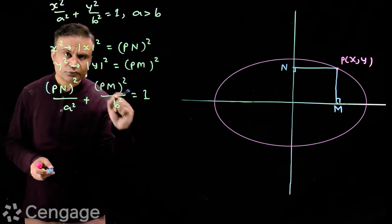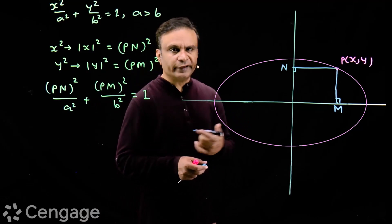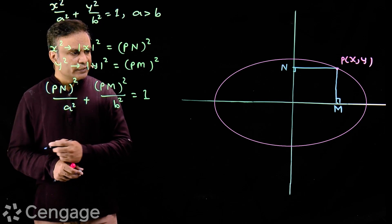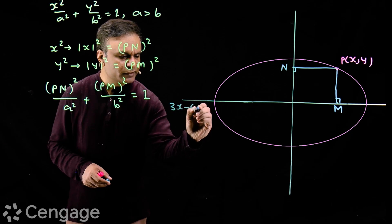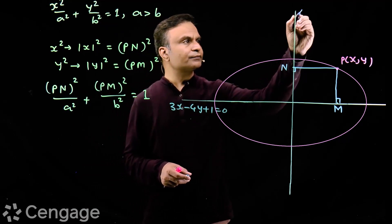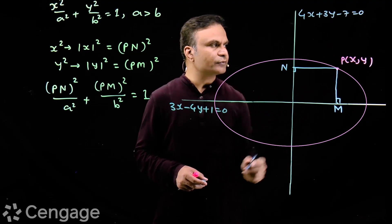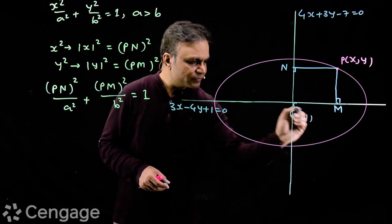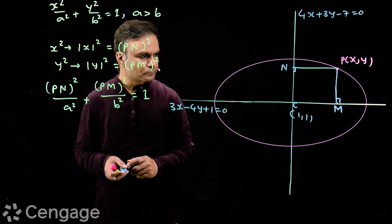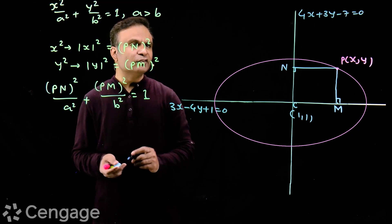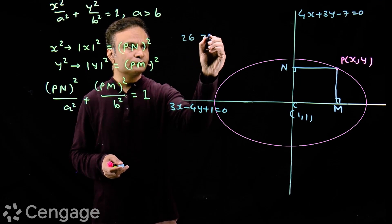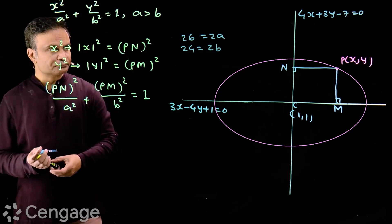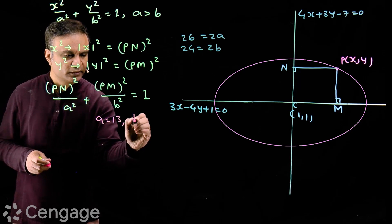Now let's see how this structural equation helps to find the equation of an ellipse when its axes are not the coordinate axes. Suppose the major axis is 3x − 4y + 1 = 0 and the minor axis is 4x + 3y − 7 = 0. The center of the ellipse C has coordinates (1, 1), obtained by solving these two equations. Suppose the length of the major axis is 26 and the length of the minor axis is 24, so 2a = 26 and 2b = 24, giving a = 13 and b = 12.